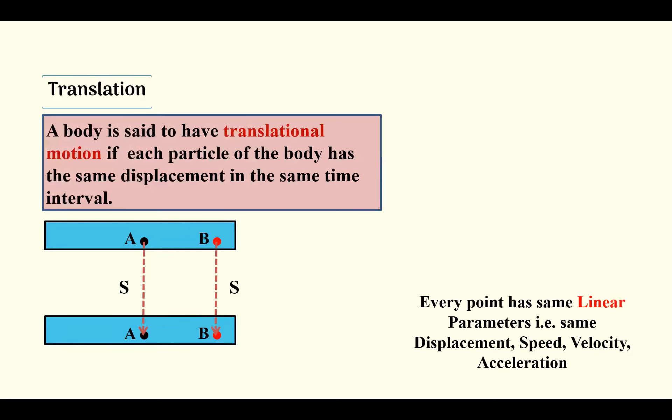So the translatory motion is defined as a body is said to be in translation if each particle of a body has same displacement in the same interval of time. Every point in the same linear parameter has got same displacement, same speed, same velocity, and same acceleration.